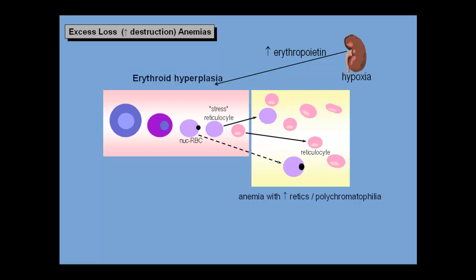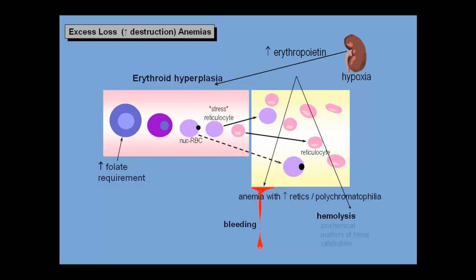If the destruction anemia and erythropoietin stimulation persist for a long time, the erythroid portion of the marrow will expand and folate requirements increase. None of these findings distinguish between the two causes of excess loss anemia — bleeding and hemolysis. The major clues for this distinction are finding the bleeding site in bleeding patients and finding biochemical markers of heme catabolism in patients with hemolysis. If bleeding persists, iron requirements increase. For the remainder of this video, we will look more closely at the hemolytic anemias and their diagnostically useful biochemical footprints.